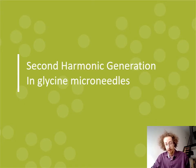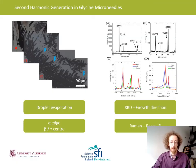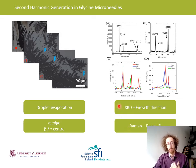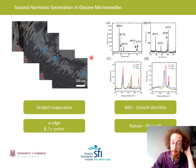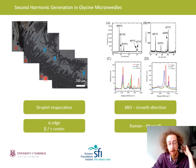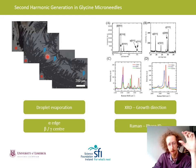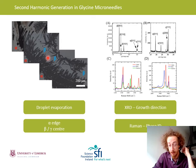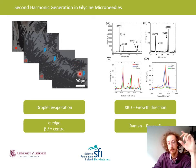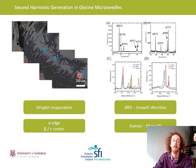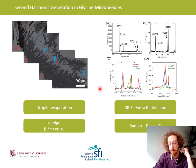Now on to second harmonic generation in glycine microneedles. Glycine is very simple to grow: mix alpha-glycine powder in deionized water, drop it onto a glass cover slip, and wait for it to evaporate. At the edges of the cover slip you get alpha-glycine, which is centrosymmetric — so not interesting for this application. But towards the centre of the droplet where evaporation is quicker, you get these asymmetric microneedles, a couple of microns in thickness and maybe 20 to 30 microns in length, of both beta and gamma phases. Glycine is polymorphic: alpha is centrosymmetric and not of interest for SHG; beta is asymmetric and monoclinic; and gamma is also asymmetric with a trigonal structure.